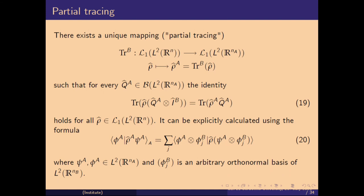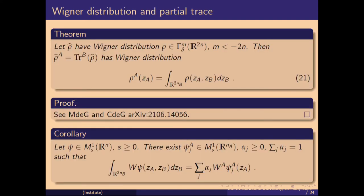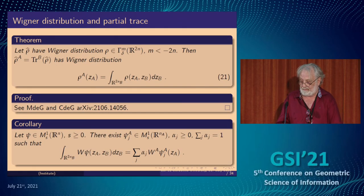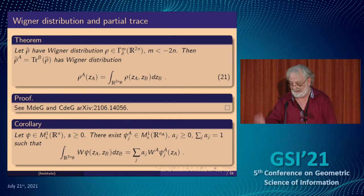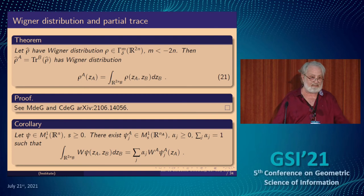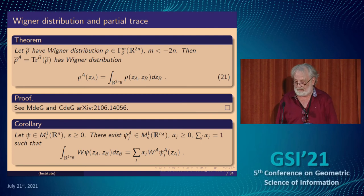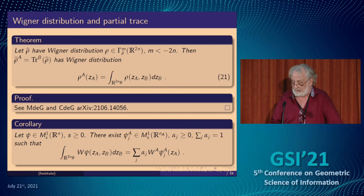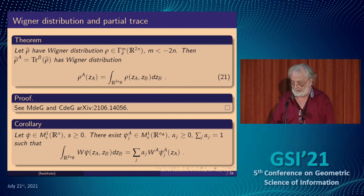Partial tracing: the Weyl symbol of the reduced density operators is obtained by integrating the full Wigner transform. This seems obvious, but I did not find any proof of it in the literature, so it deserved to be written down. It's not fully trivial.